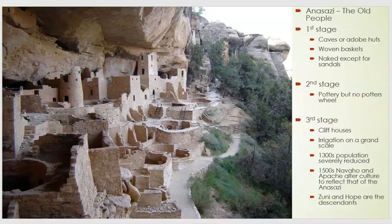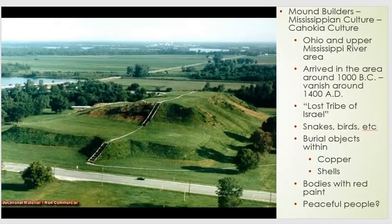From there, we move to the next Native American group: the Cahokia culture, sometimes also known as the Mississippian culture and sometimes also known as the mound builders. These are Native Americans who live in the Ohio and upper Mississippi River Valley areas. From archaeological evidence, we know that they arrived in the area about 1000 BC. When these Native Americans were first found by Americans moving into the area in the early 1800s — settling down with their farms — they began to find a variety of mounds of dirt in their farmland.